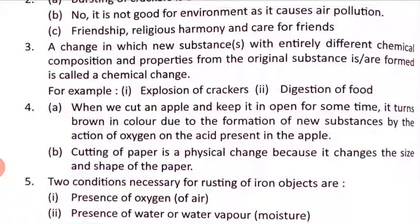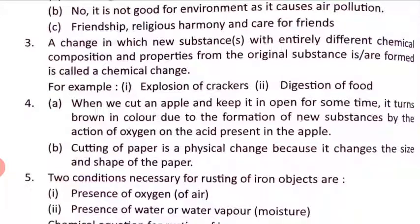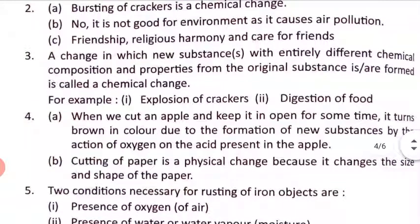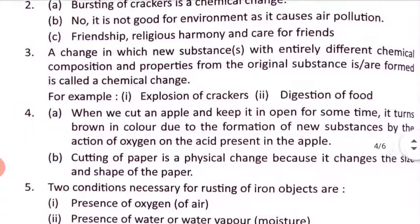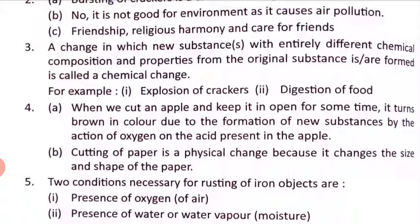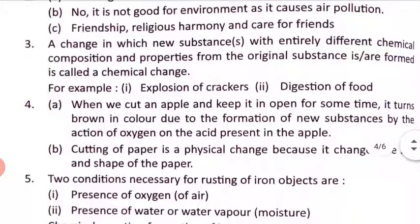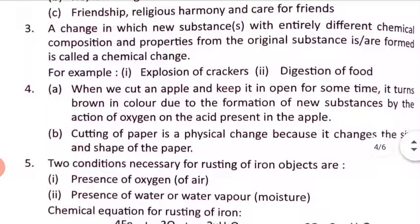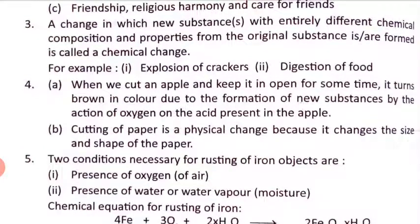Third question: what is a chemical change? Give two examples. A chemical change is one in which new substances, entirely different in composition and properties from the original substance, are formed. Examples: explosion of crackers and digestion of food.